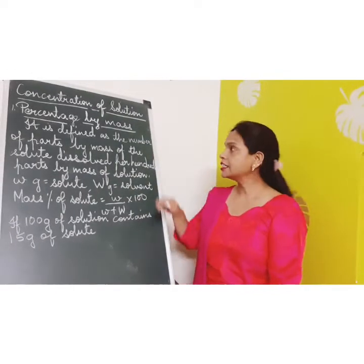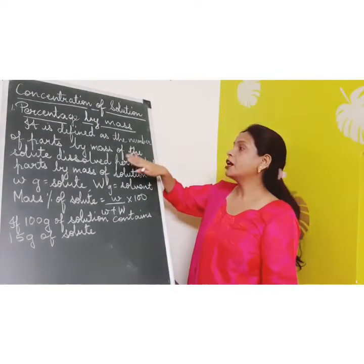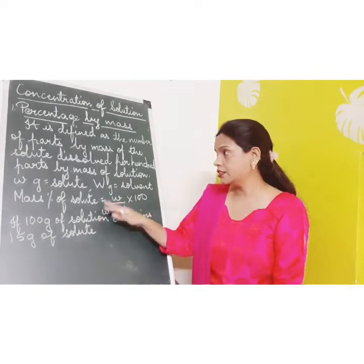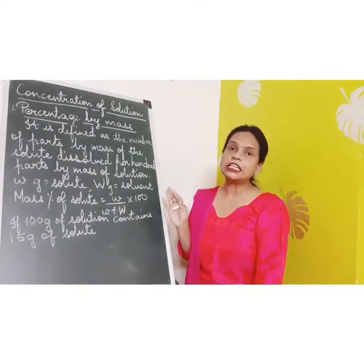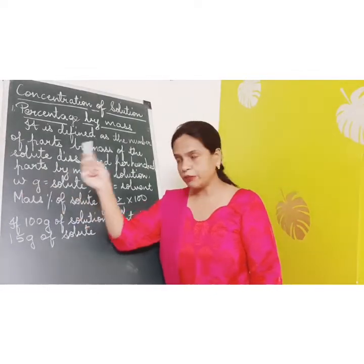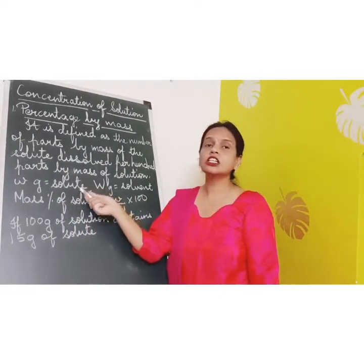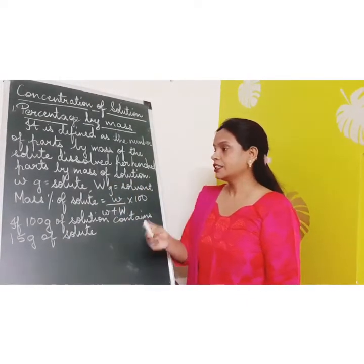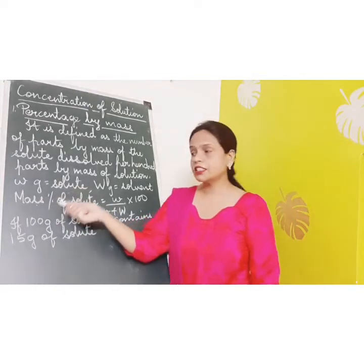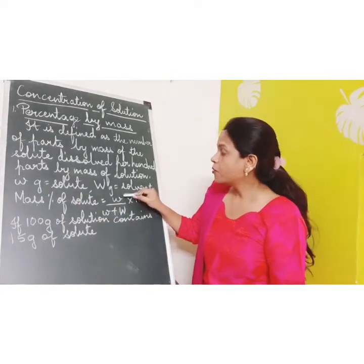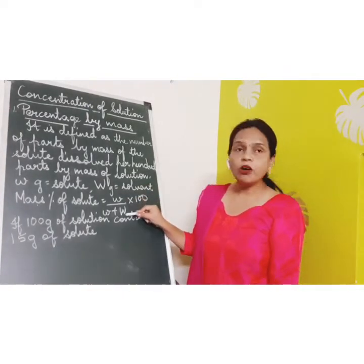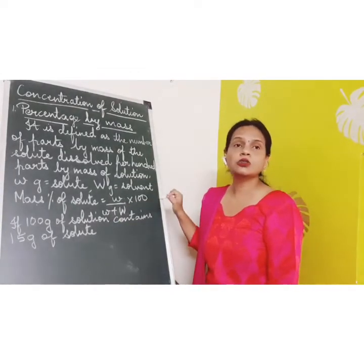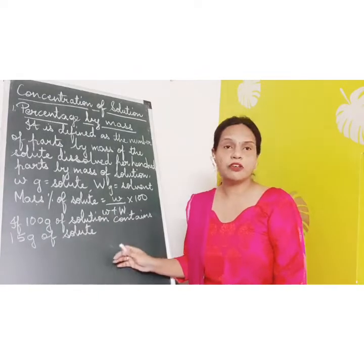Percentage by mass can be defined as the number of parts by mass of the solute dissolved per hundred parts by mass of solution. In simple words, if small w is the mass of the solute and capital W is the mass of the solvent, then mass percentage of the solute equals mass of the solute upon mass of the solution — that is mass of solute plus mass of solvent — into hundred.